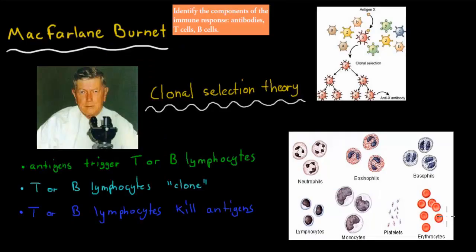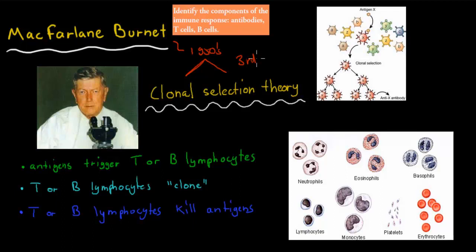McFarlane Burnett, who's an Australian scientist, came up with a pretty interesting theory in the 1950s, and this theory was all about the clonal selection theory. We talked about the first and second line of defense in previous videos, so you can guess that we're going to be talking about the third line of defense in this video. The clonal selection theory is all about the third line of defense, and it talks about these special types of white blood cells which we call the lymphocytes.